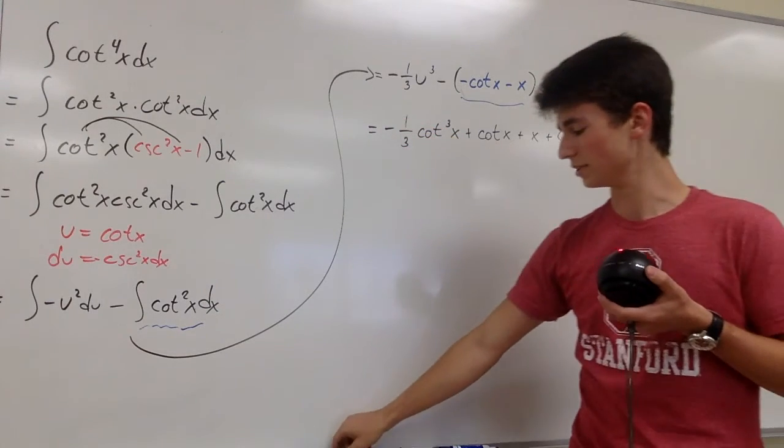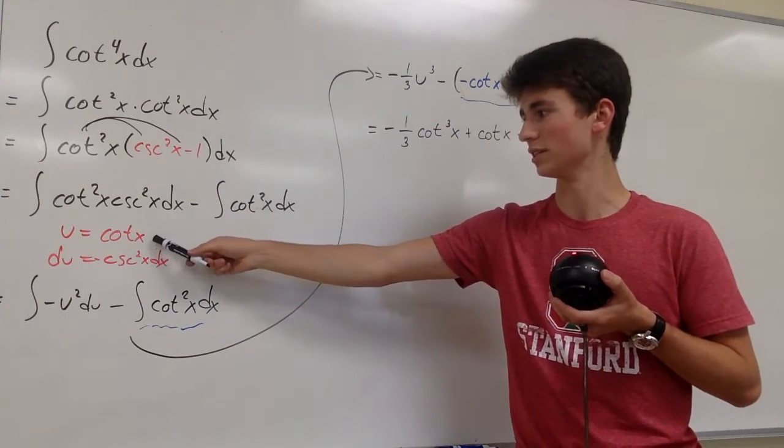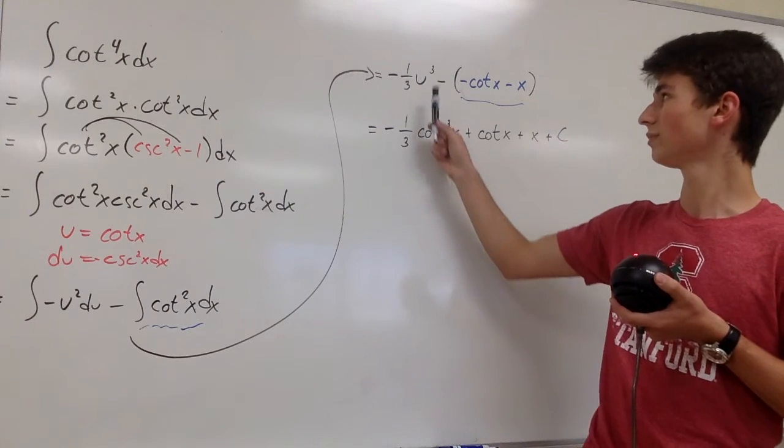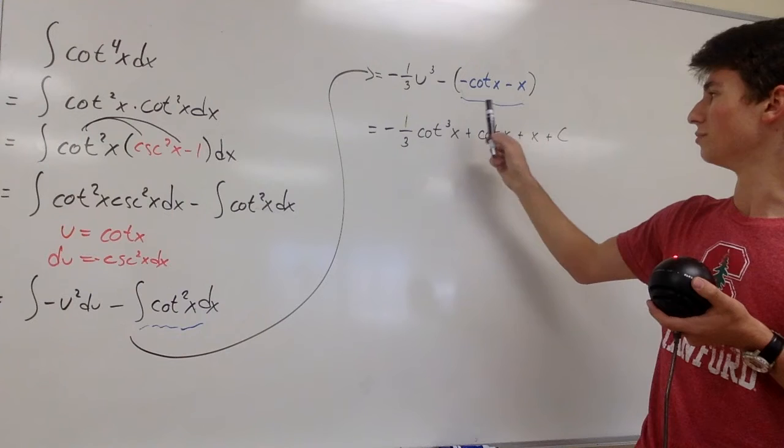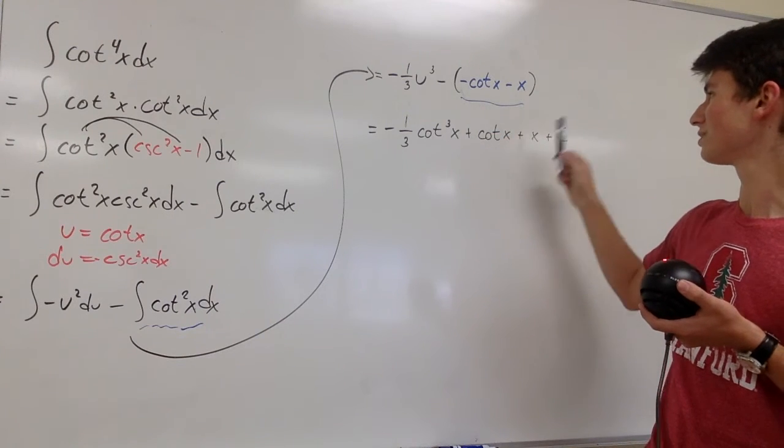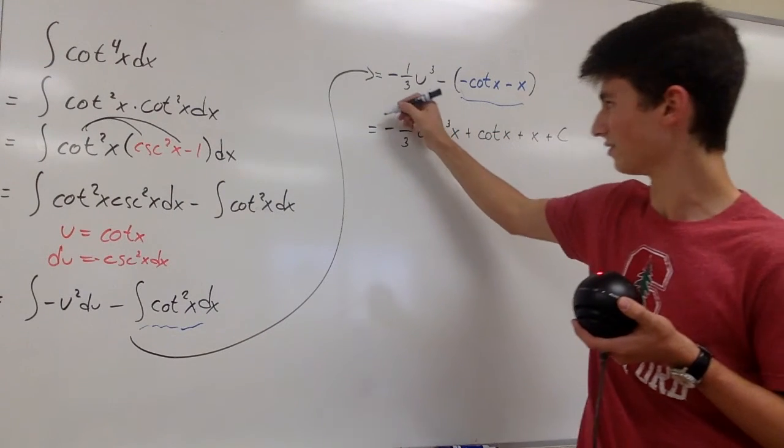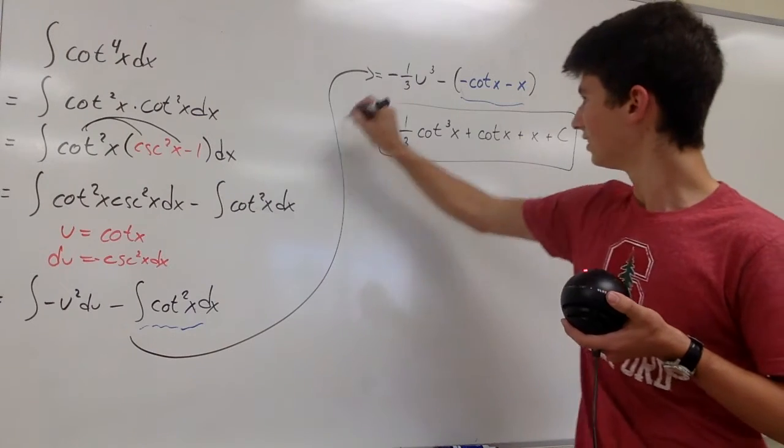And so our final answer becomes, after we substitute cotangent of x back into the u, is negative one-third cotangent cubed of x plus cotangent of x plus x and plus c because it's indefinite. And that's it.